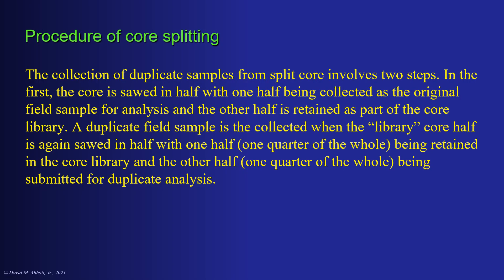In the core splitting procedure, you collect duplicate samples in two steps. First, the core is sawed in half, with one half collected as the original field sample for analysis and the other half retained as part of the core library. A duplicate field sample is then collected when the library core half is sawed in half again — making it a quarter of the whole. One quarter is retained and the other quarter is submitted for duplicate analysis.